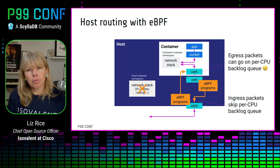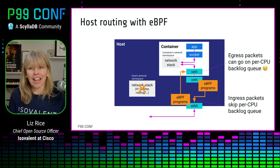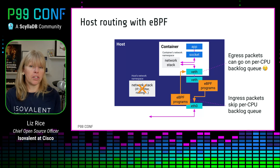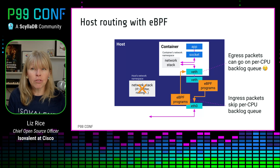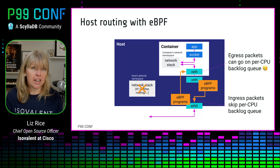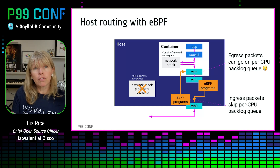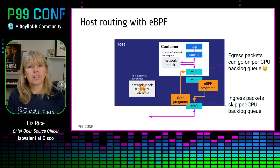This is a problem that occurs because we can't attach eBPF programs inside the container. You need elevated privileges to load and attach eBPF programs, and as a general rule, you don't want containers to have those privileges. But if we want to avoid that backlog queuing, we'll need to be able to attach eBPF programs to the network device inside the container.